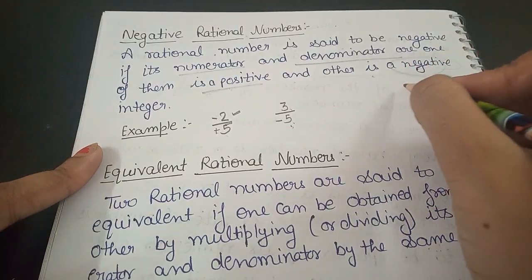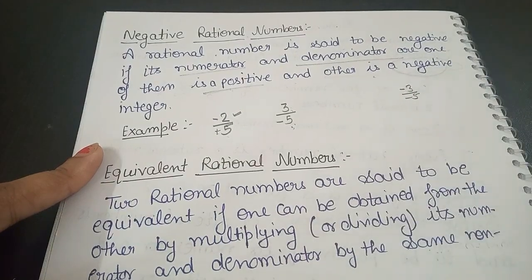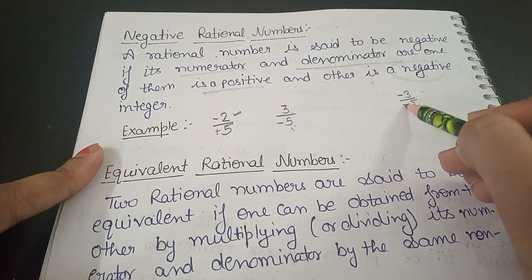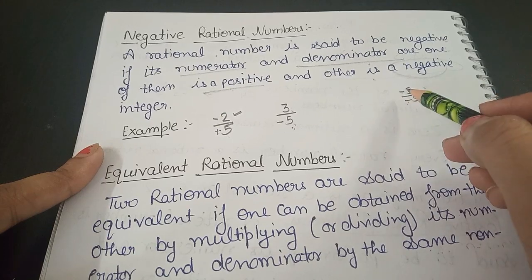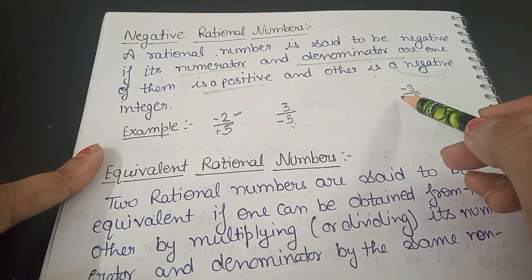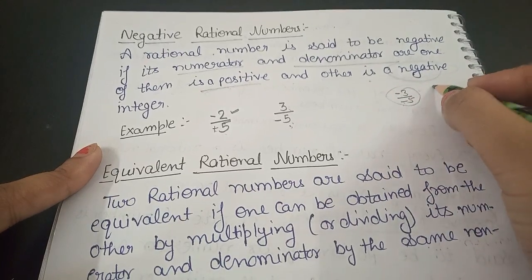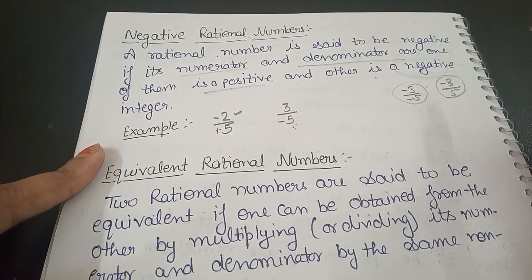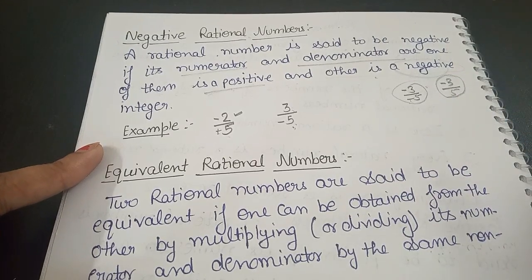If you are ever asked: is (-3)/(-5) a positive or negative rational number? Both values are negative, so it is a positive rational number. But if the value is (-3)/5 — one positive and one negative — then it is a negative rational number.